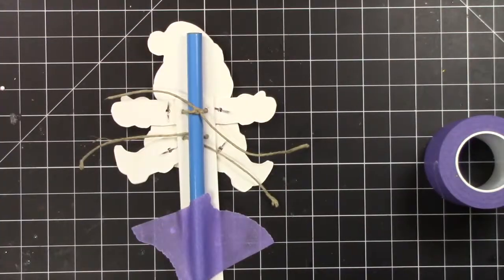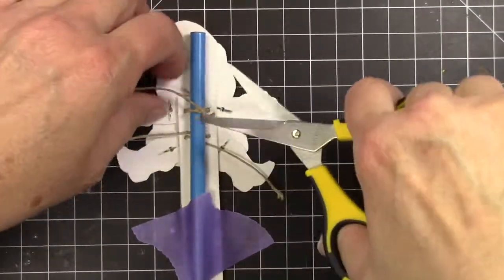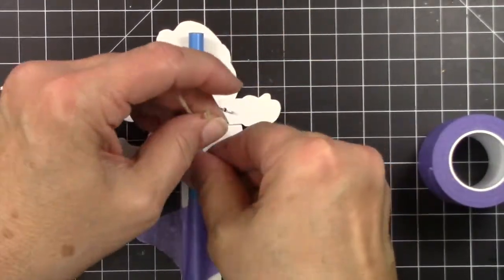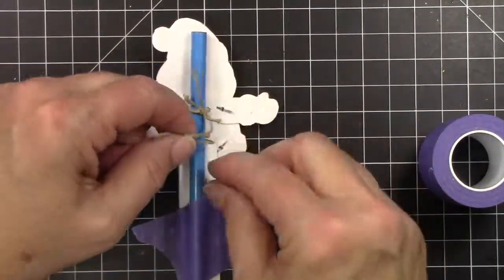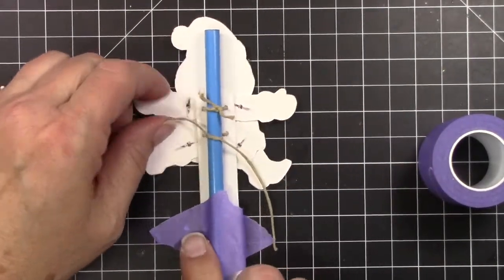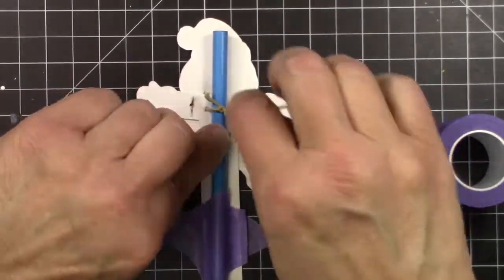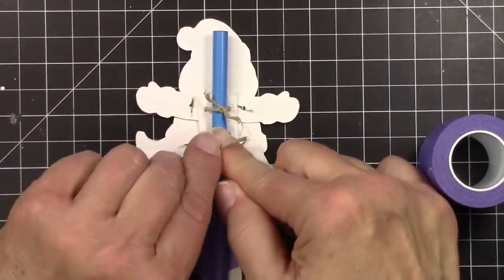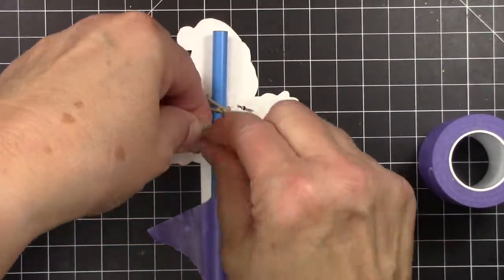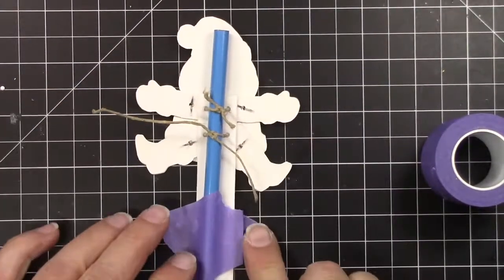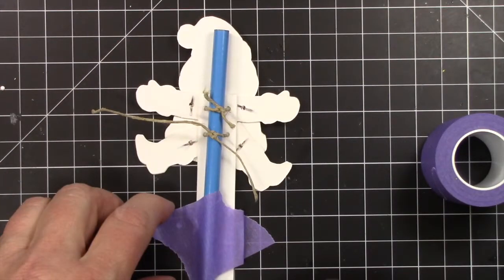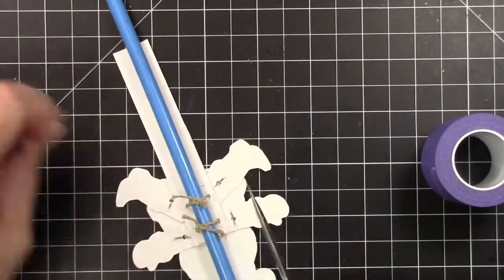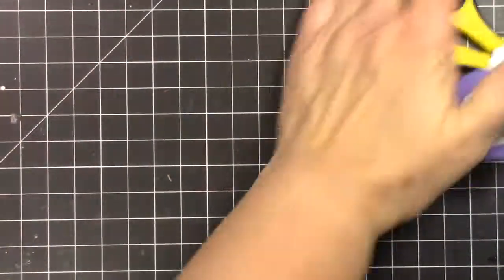And then I'm just going to trim off anything that would show. There's just no real graceful way to show this. I could have used longer twine. It would have made it a lot easier. But it says on the package to cut six inches. So I cut six inches. So that's the mechanism. Trimming off the rest of that. Pull the pencil out.